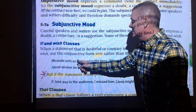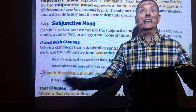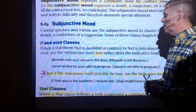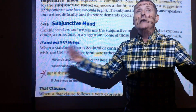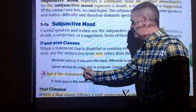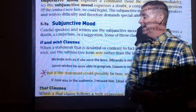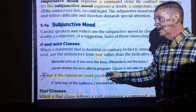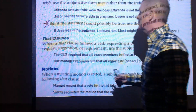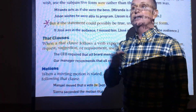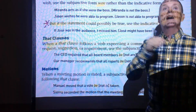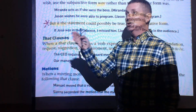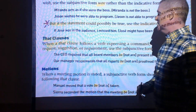'Miranda acts as if she were the boss' — clearly contrary to fact, so use the subjunctive 'were.' 'Jason wishes he were able to program' — he's not, so use 'were.' But if the statement could be true, follow traditional rules: 'If Jose was in the audience, which is possible, I missed him' — this is a possibility, so use the singular verb 'was.'